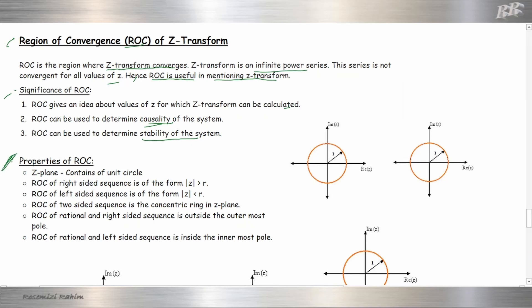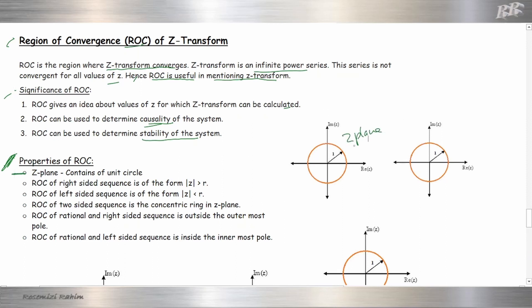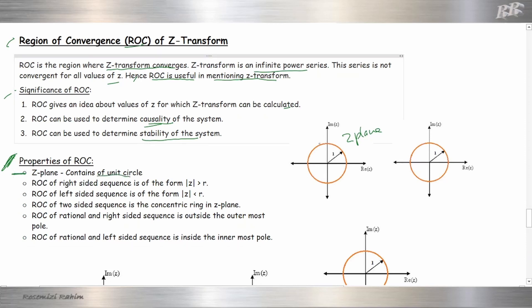Now, properties of ROC. The ROC consists of the Z-plane, and also the unit circle. This orange color is the unit circle with radius R equal to 1. This is the basic concept of ROC.